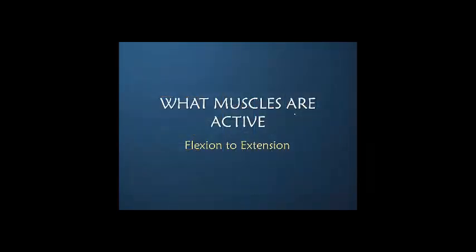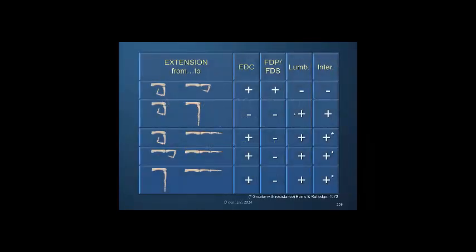Flexion to extension, we see the opposite. We see the lumbrical picking up. We see that if there is resistance the interossei contributes more. And here when just the MP joint is extending, the lumbrical and interossei stay totally inactive, but the FDS and FDP are active in both postures.